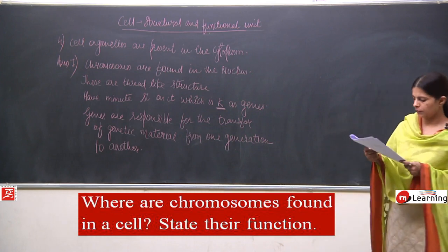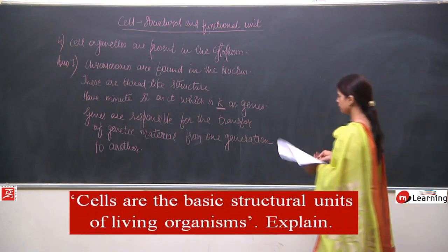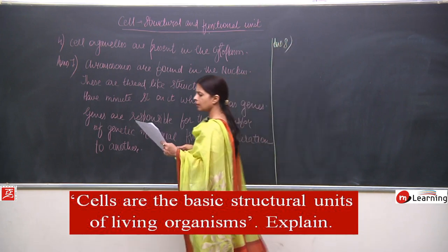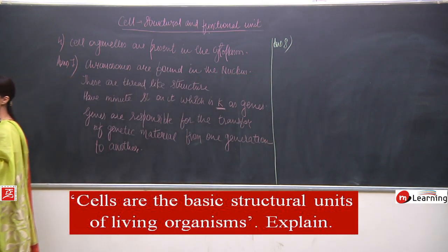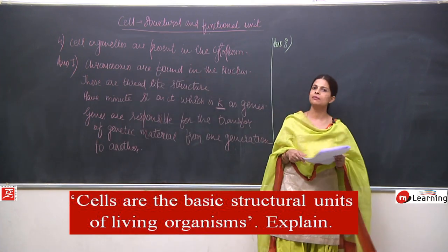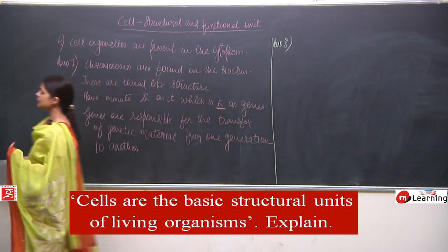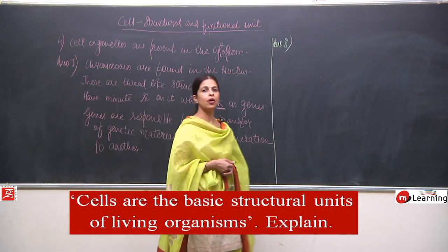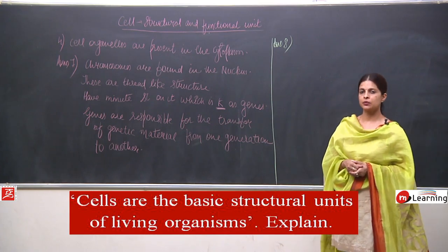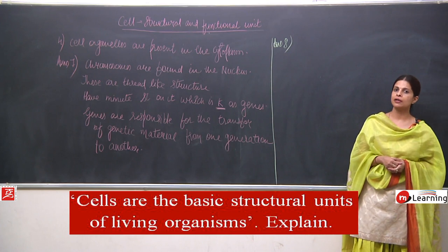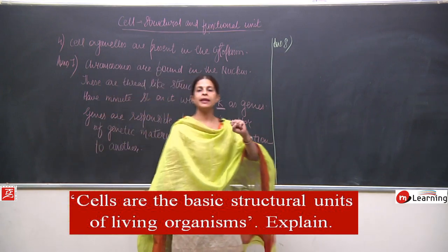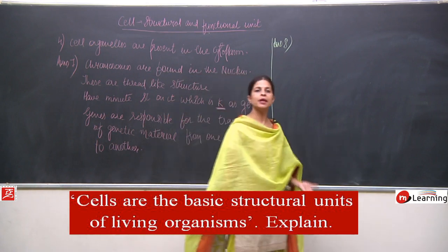Moving to question number 8: cells are the basic structural units of living organisms — explain. We have discussed many times that a cell is what makes any living organism. The cell is the smallest living part of any organism. When many cells combine they form tissues, tissues form organs, organs form organ systems, and organ systems form the body. In reverse, the body is made up of different organs.